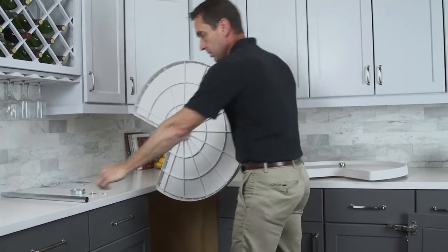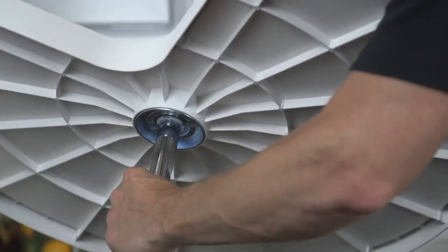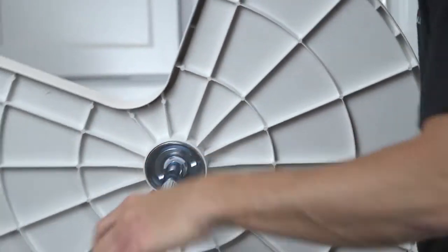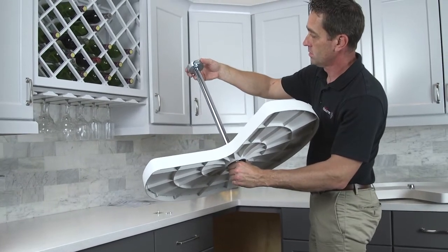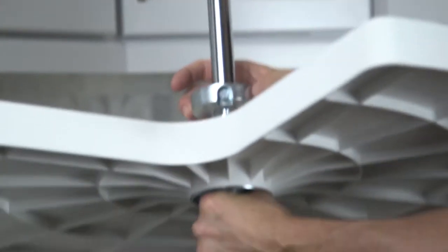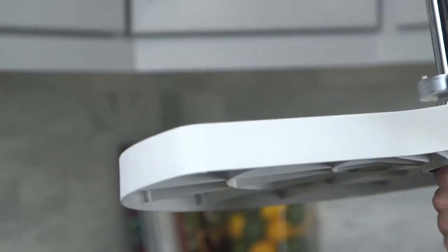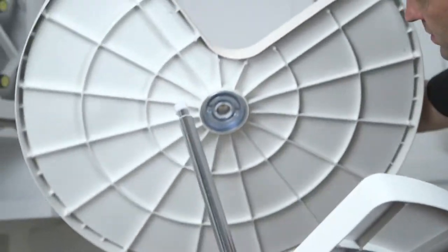From the top of the pole, slide on one shelf assembly, the other shelf support, and then the second shelf assembly.